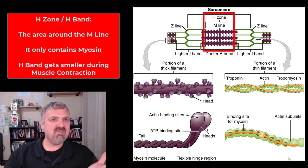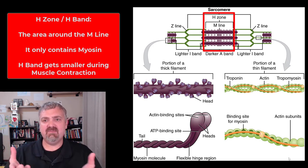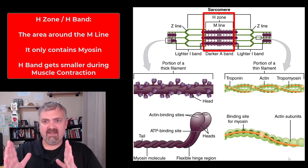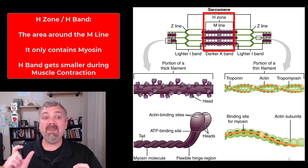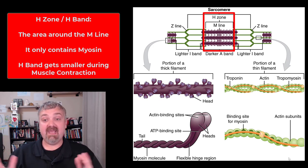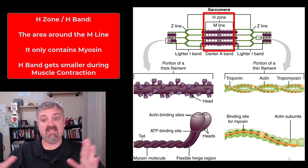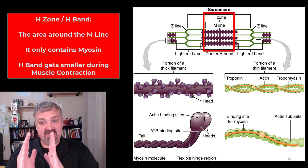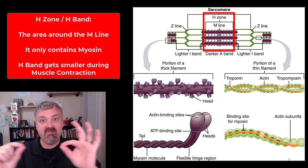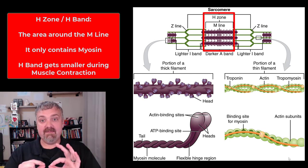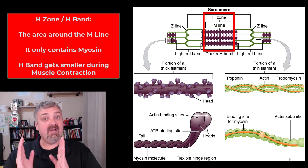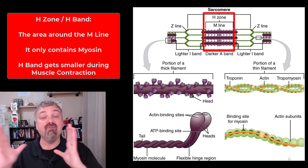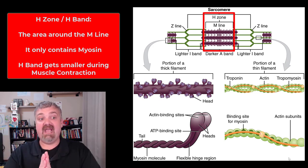Next we have the H zone, or H band. This is a zone right around that M line that only contains the thick filaments, myosin. The H zone is also going to get smaller during contraction. That's because myosin is not moving, but it's pulling actin toward it — so that H zone gets squeezed in as actin is pulled towards the center of the sarcomere at the M line. The H band is the area with only myosin, and it will get smaller during contraction.